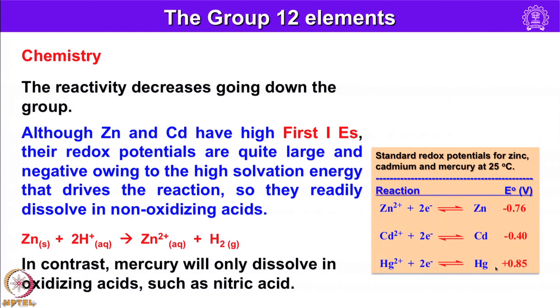The reactivity of Group 12 elements decreases down the group. Although zinc and cadmium have high first and second ionization energies, their reduction potentials are quite large and negative owing to the high solvation energy that drives the reaction, so they readily dissolve in non-oxidizing acids, forming Zn²⁺ ions. In contrast, mercury will only dissolve in oxidizing acids such as nitric acid. The standard reduction potentials are: zinc −0.76 V, cadmium −0.40 V, and mercury +0.85 V.